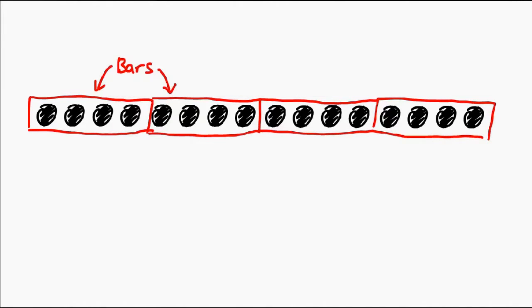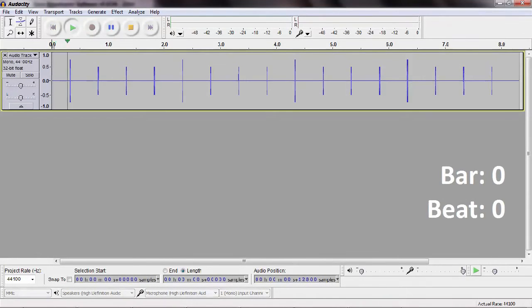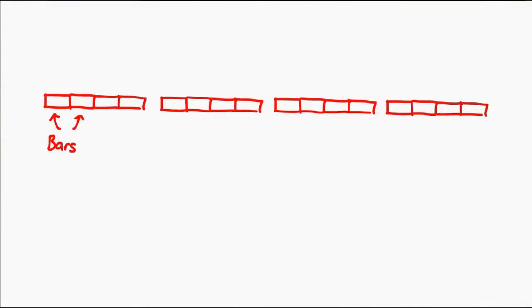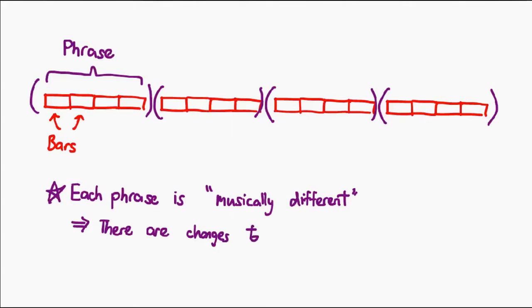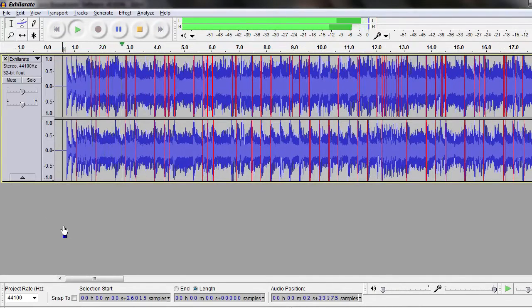For most songs, beats belong together in groups of four — these groups are called bars. Depending on the time signature of a song, you may have more or less beats in a bar, though that is less common. Bars also come together to form groups called phrases. Each phrase groups together a set of bars that are musically similar. This means that when you hear changes in a song — say the beat or the melody changes — you've moved from one phrase to another. So this next strategy involves identifying and working with the individual phrases: you can actually segregate your song into its phrases, drop certain phrases, or rearrange them around.